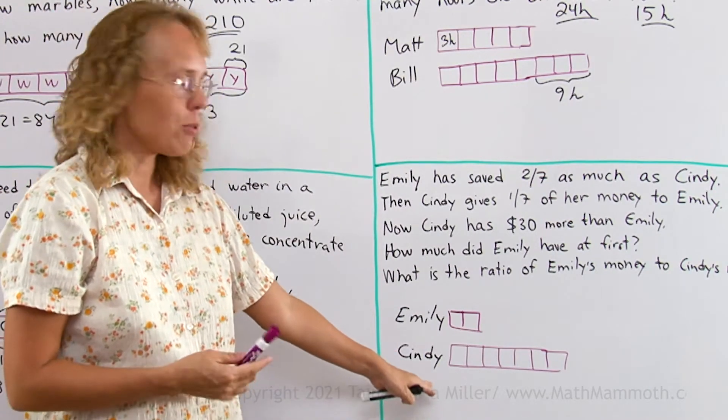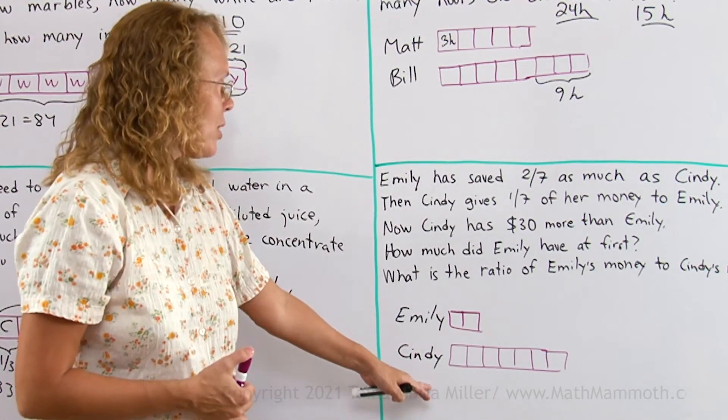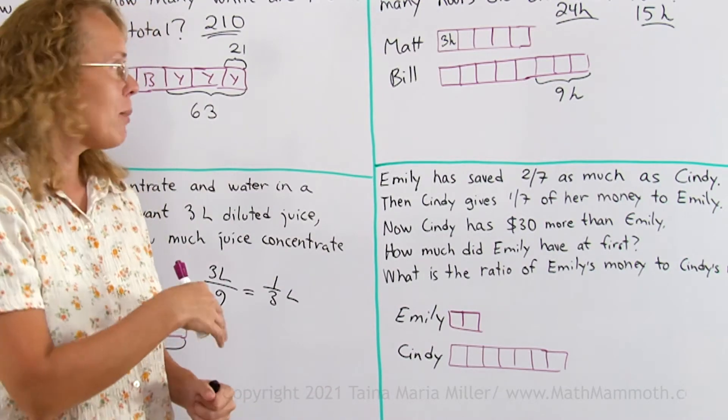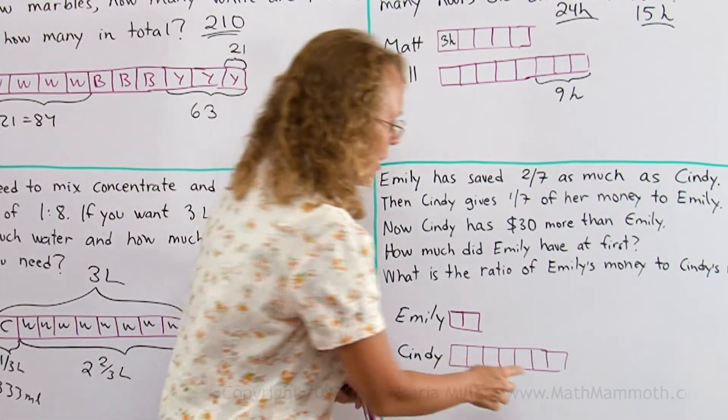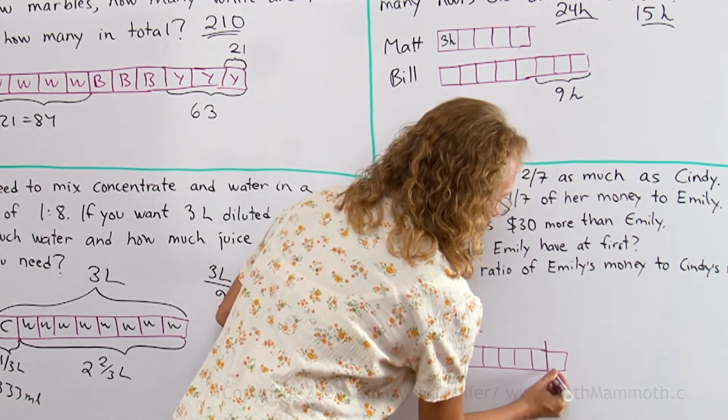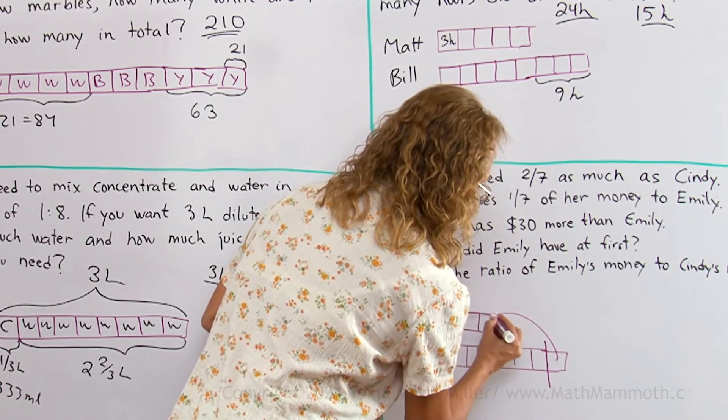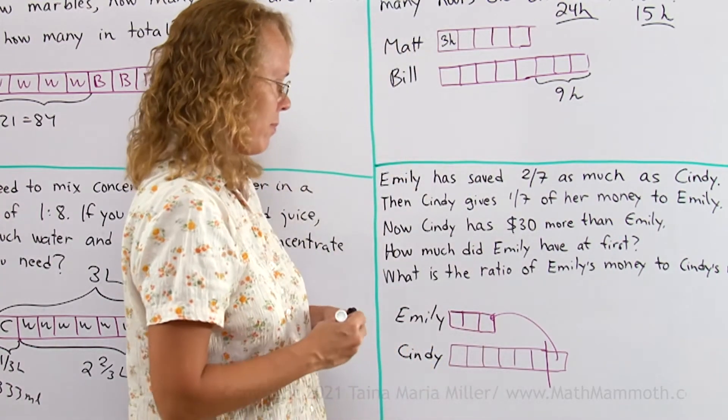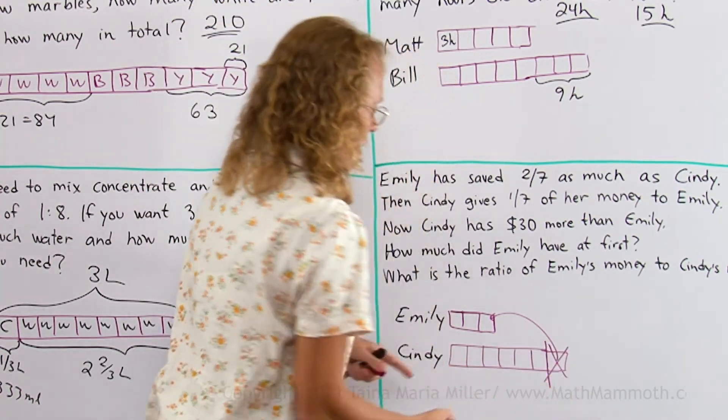And now Cindy gives 1 seventh of her money to Emily, so I will take 1 seventh of her money, which is one of these blocks, and let's imagine this gets cut off and moved over here, like that. So it's gone from here, it's moved there.